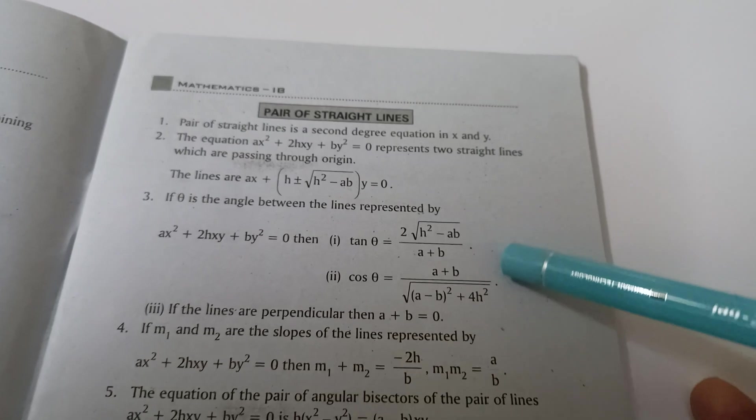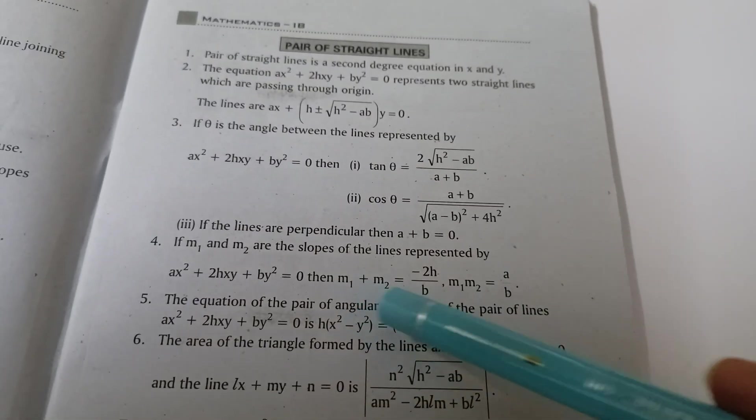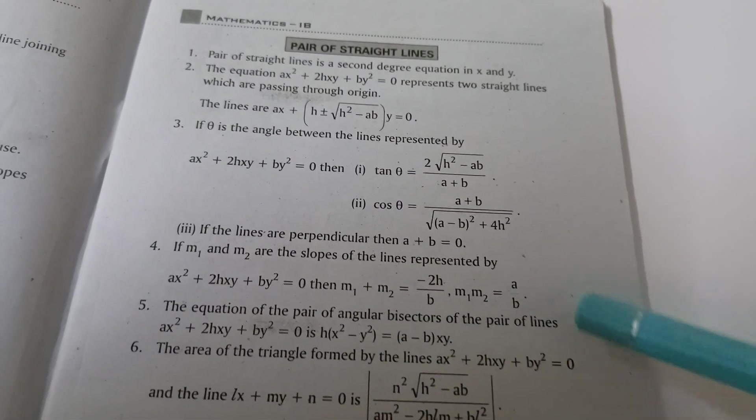Formulas, just to pair of straight lines. m₁ + m₂ = -2h/b, m₁m₂ = a/b.